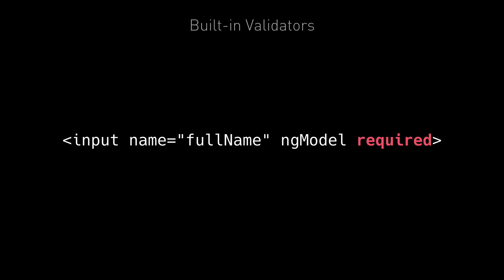Template-driven forms are just model-driven forms with the model creation driven by the template — they still have an underlying model. Therefore, just like a model-driven form, we need to attach a validator function to the underlying form control. Angular does this secretly by creating special validator directives with selectors matching required, min-length, max-length, and pattern. Let me show you the Angular source code.